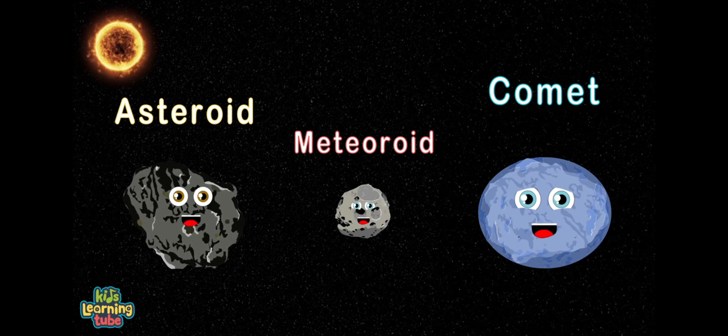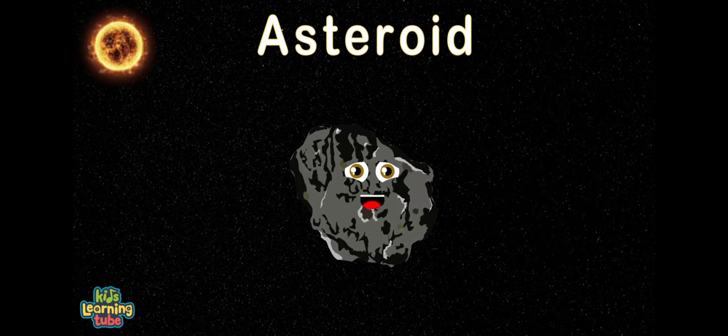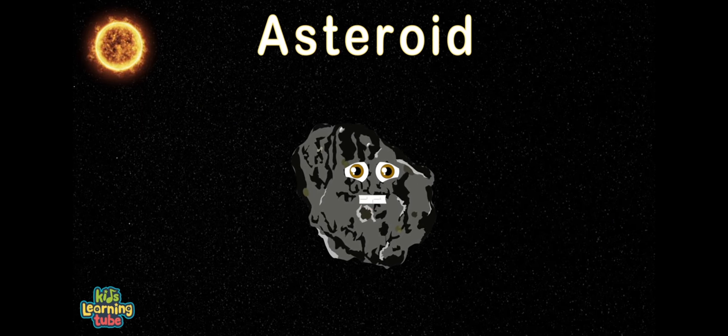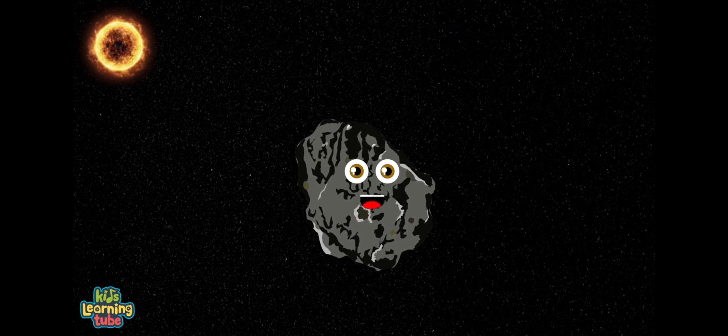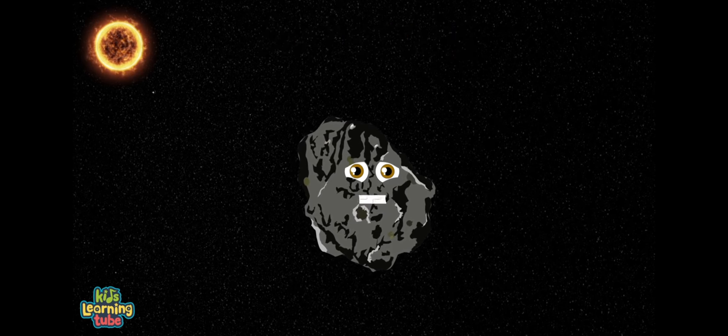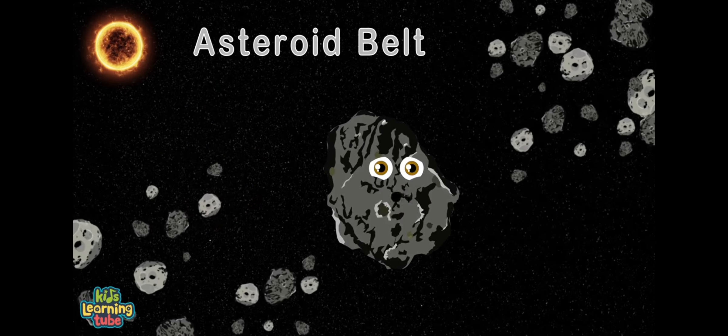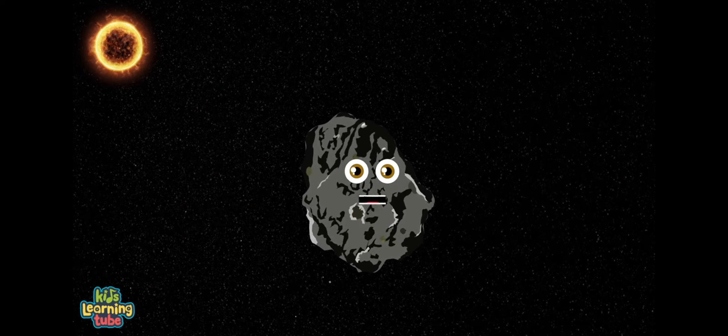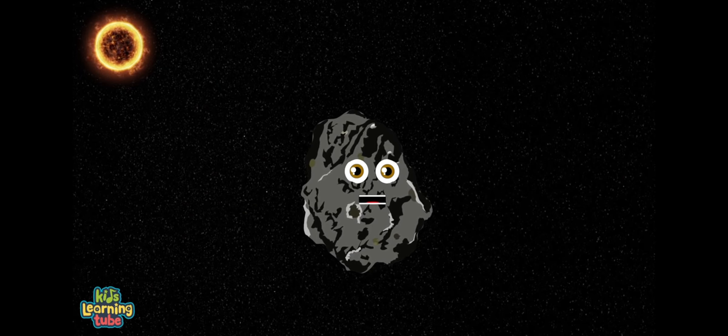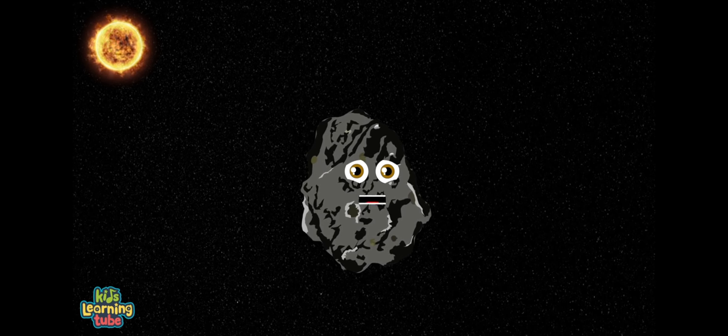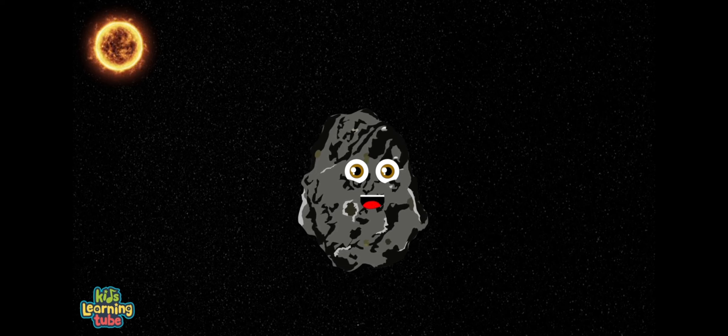I'm an asteroid, also called a minor planet to some. A rocky, airless remnant left over from our solar system's formation. You can find a lot of asteroids orbiting our sun between Mars and Jupiter within the asteroid belt. I can range in size from about 329 miles down to 33 feet. I've been here for a while. I'm made up of different kinds of rocks, and some have clays and metals such as nickel and iron, found in frying pans or kettles.